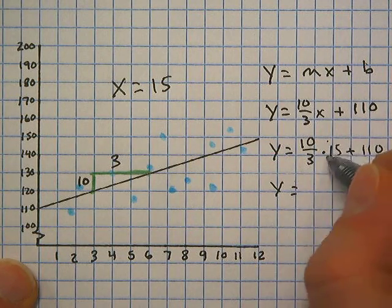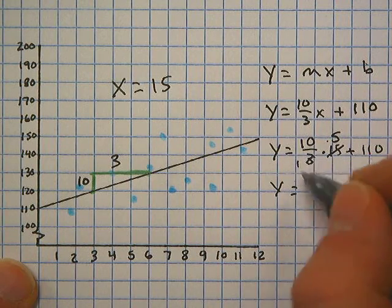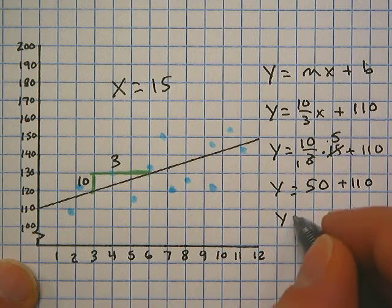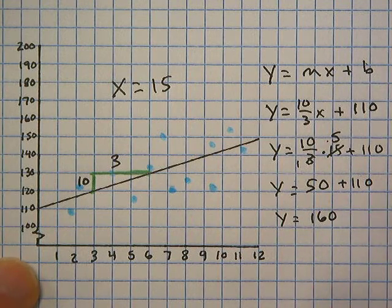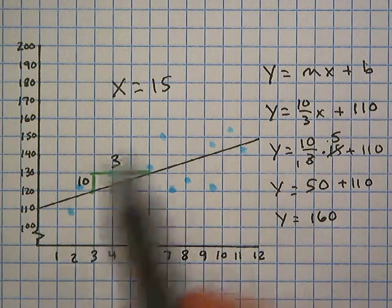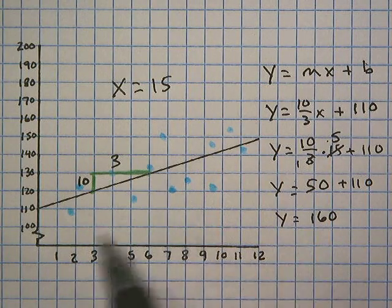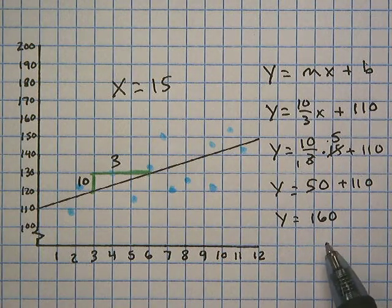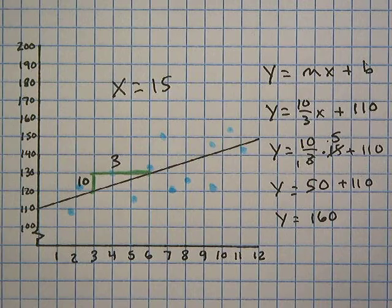So y equals, well we can simplify this, 3 goes into 15 five times. 10 times 5 is 50 plus 110. So y is equal to 160. So for this association, this relationship, this situation, whenever x is equal to 15, we expect y to equal 160.